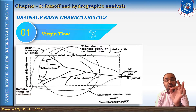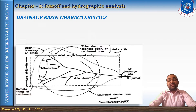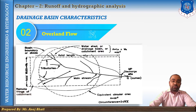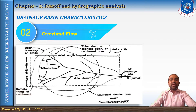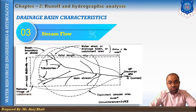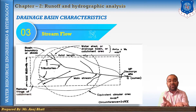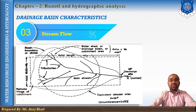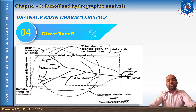The second is overland flow — the part of runoff which flows over the land surface towards the river channel is known as overland flow. The third is stream flow — the overland flow plus other components of flow forming the total runoff of the river is known as stream flow. The fourth is direct runoff — the part of runoff which enters the stream quickly after rainfall or snow melting is known as direct runoff.